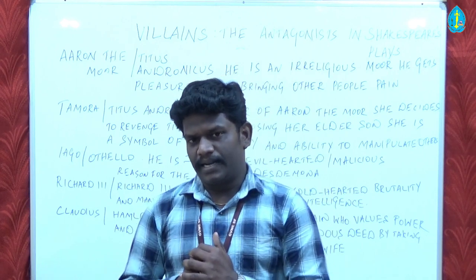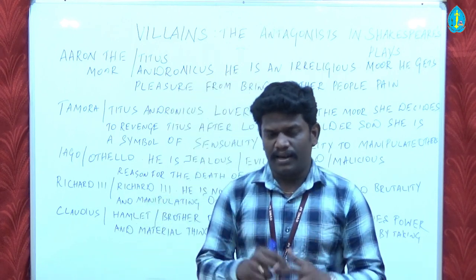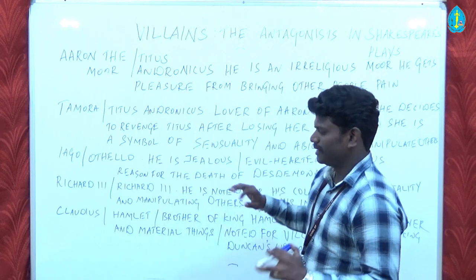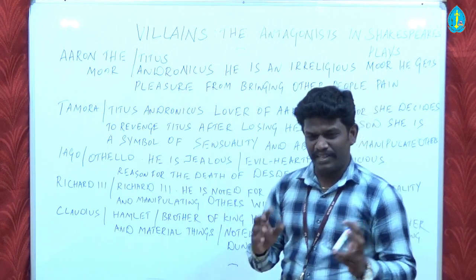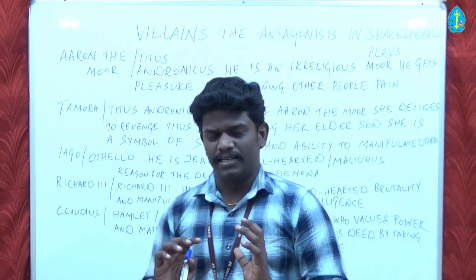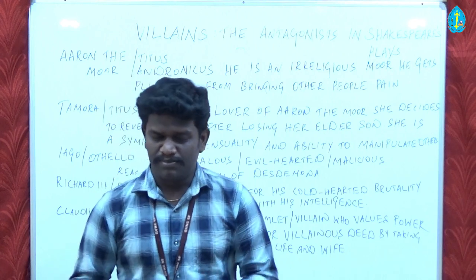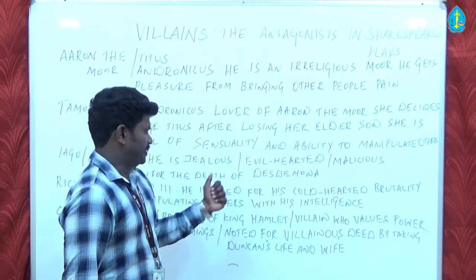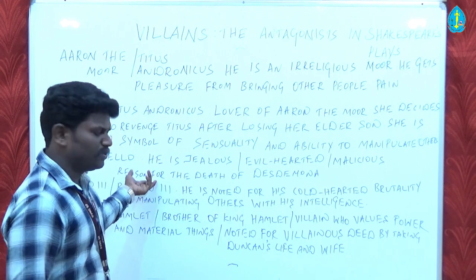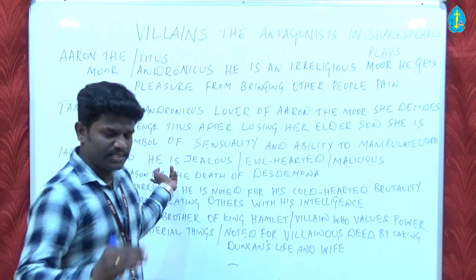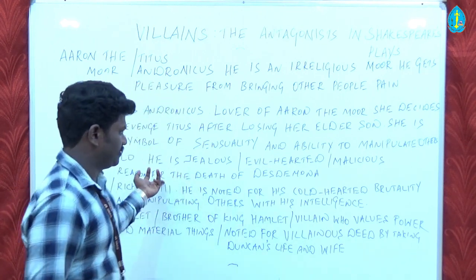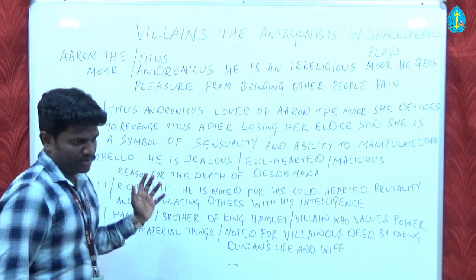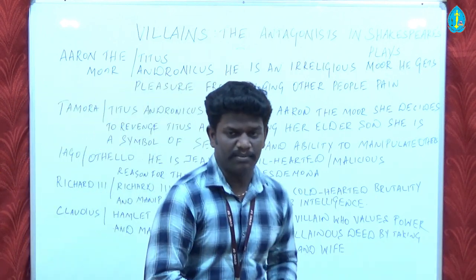He wanted to ruin the life of this particular beautiful couple, Othello and Desdemona. He did so many brutal deeds, he did so many unwanted things. So this particular man is a symbol of evil-hearted and malicious. He is a main root cause and the main cause for the death of Desdemona. So this particular man is a symbol of brutal villain in Shakespeare plays.